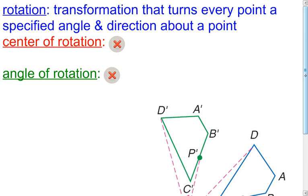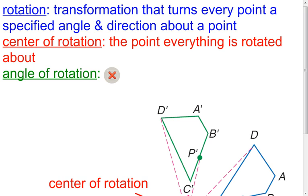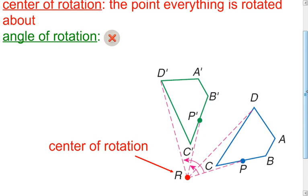Now the parts of a rotation, one would be the center of rotation, that's a very important part. That's the point that we're going to rotate everything about. So in this case, point R is my center of rotation. Everything is rotating around that point.